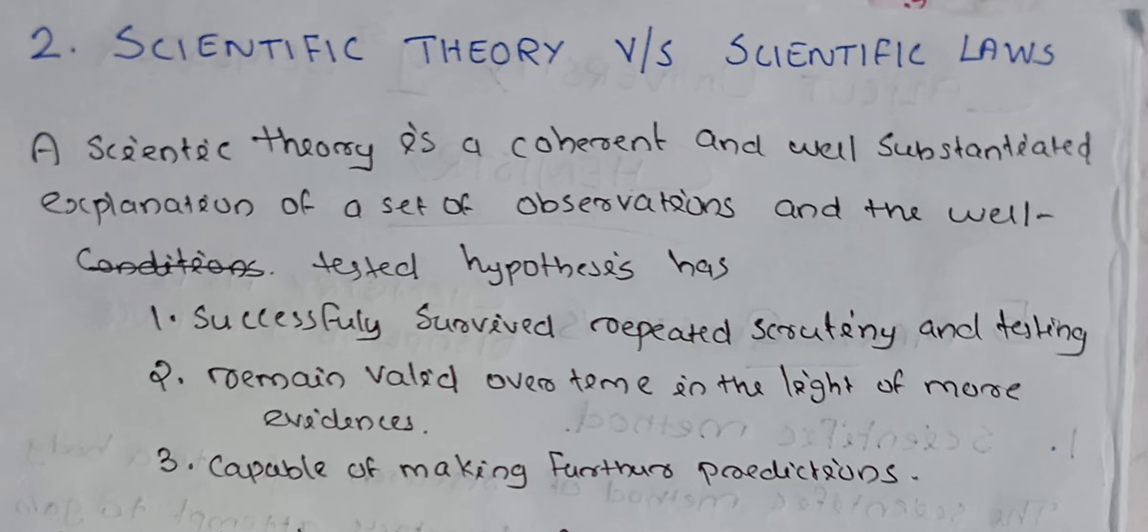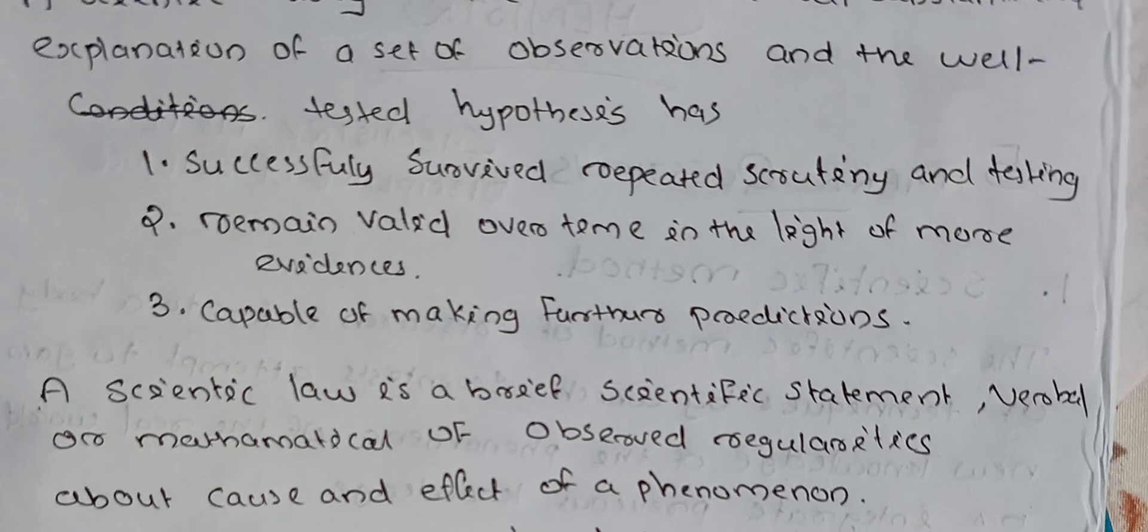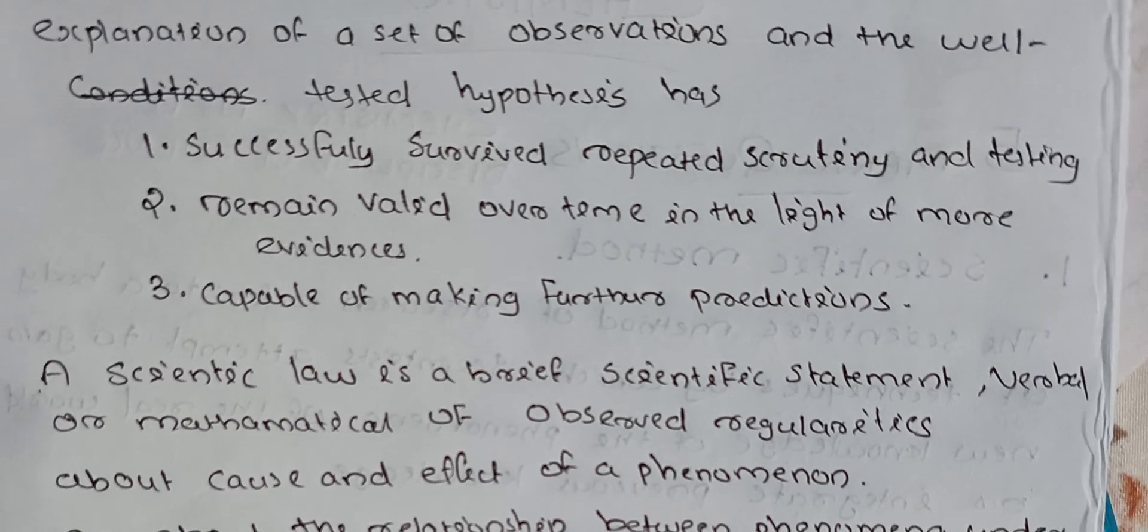What is scientific theory? This scientific theory is a coherent and well-substantiated explanation of a set of observations under the well-tested hypothesis. It has successfully survived repeated scrutiny and testing, remains valid over time in the light of more evidence, and is capable of making further predictions.